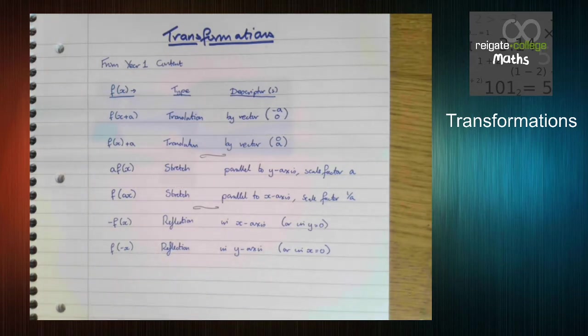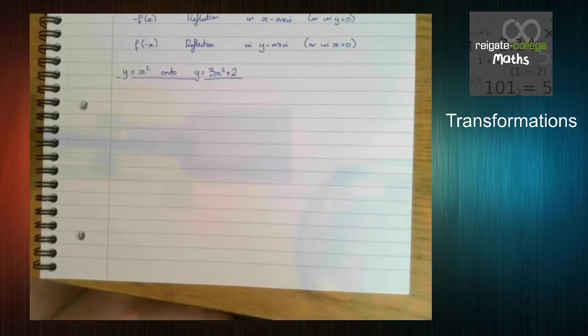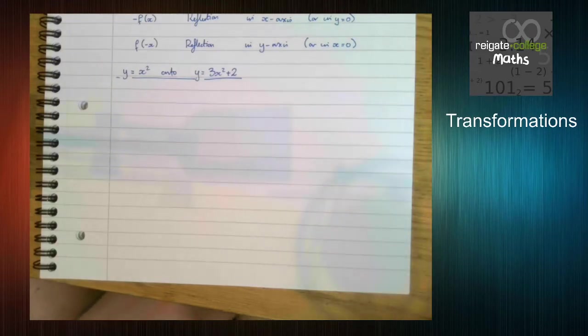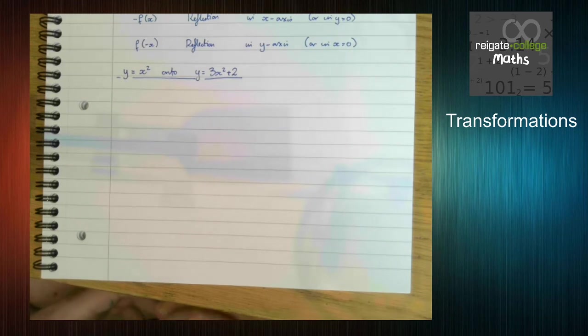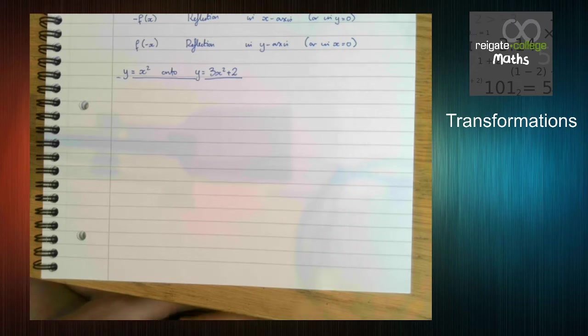So what we're going to do is we're just going to have a look at transforming graphs with multiple transformations. So let's have a look at this example here. We are going to look at and explore the idea of the transformations that map y equals x squared onto y equals 3x squared plus 2. So hopefully you can all see immediately that there are multiple transformations. We have two. We've got something that changes the xy bit and something that adds on the end.